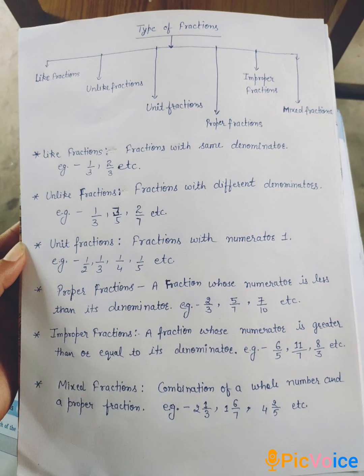Next, improper fraction. A fraction whose numerator is greater than or equal to its denominator. For example, six by five, eleven by seven, eight by three, etc. are improper fraction.